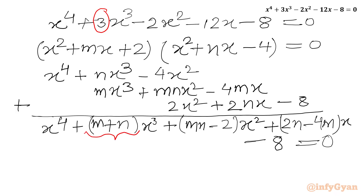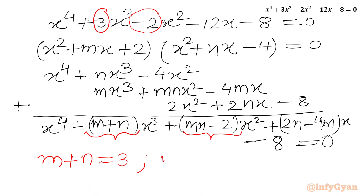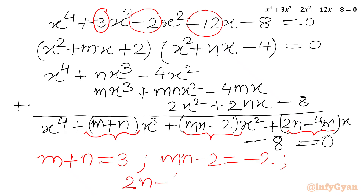Now comparing coefficients from both equations. Coefficient of x³ is 3, so: M + N = 3 (first equation). Coefficient of x² is minus 2, so: MN − 2 = −2 (second equation). Coefficient of x is minus 12, so: 2N − 4M = −12 (third equation). We now solve this system for M and N.